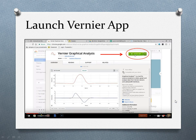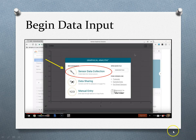That should lead you to a screen that says Launch App. The Chromebooks on our cart have this Graphical Analysis App already installed, so you should just need to click Launch App. From there you'll get this screen and what we're going to be doing is sensor data collection.